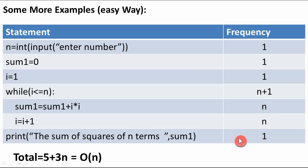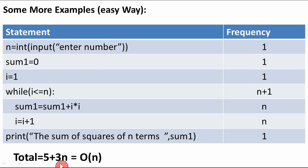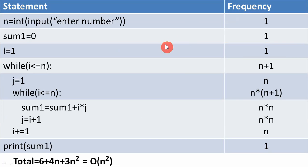The print statement outside the loop executes once (frequency = 1). Adding all frequencies gives 5 + 3n. In Big O notation, we discard constant values and coefficients, keeping only the highest degree of n. The degree of n is 1, so the time complexity is O(n) — linear time complexity. This is a simple method to find the time complexity of any program.